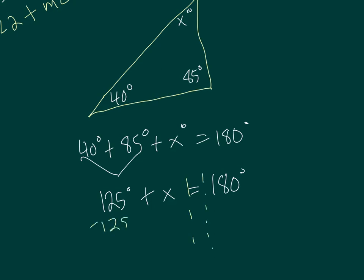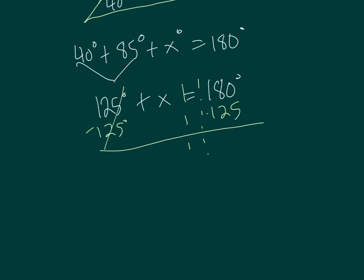Subtract 125 on both sides. And bring down your x. So the missing angle has a measure of 55 degrees. And that would be your answer. If you want to double check, add all three of those angles back up. 40 plus 85 plus 55 and it should come out to 180.